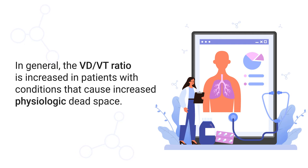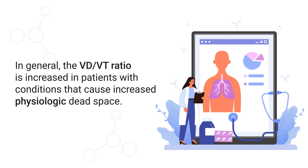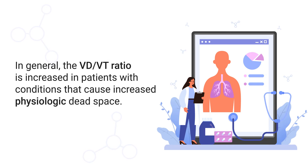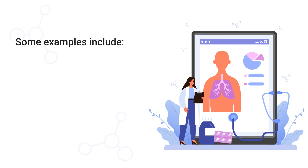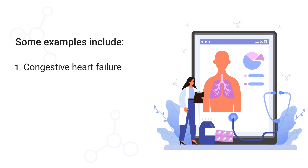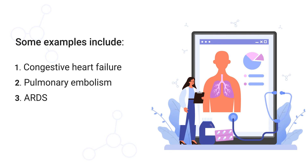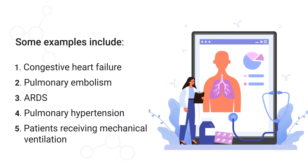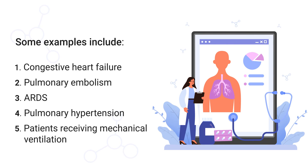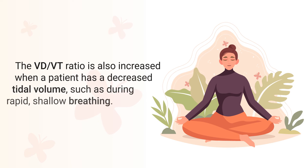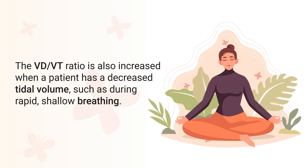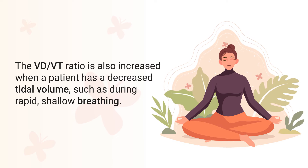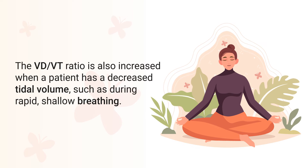In general, the dead space to tidal volume ratio is typically increased in patients with conditions that cause increased physiologic dead space. Some examples include CHF, pulmonary embolism, ARDS, pulmonary hypertension, and patients who are receiving mechanical ventilation. The ratio is also increased when a patient has a decreased tidal volume, such as during rapid shallow breathing.